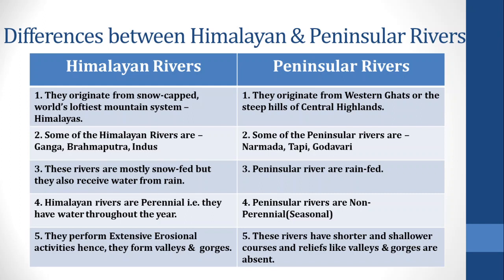Point 2 — Some of the Himalayan rivers are Ganga, Brahmaputra, and Indus. Some of the Peninsular rivers are Narmada, Tapi, and Godavari.